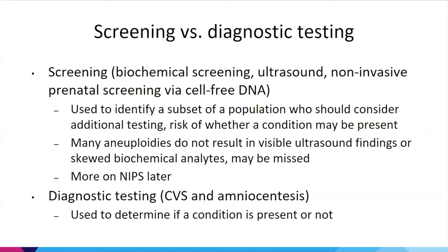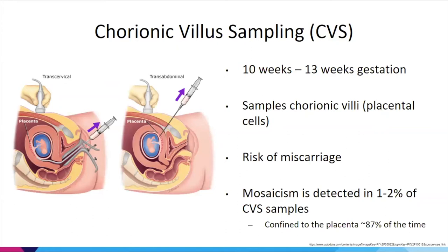This is as opposed to diagnostic testing, which is either chorionic villus sampling, CVS, or amniocentesis, and is used to determine if a condition is present or not. Chorionic villus sampling occurs in the first trimester, between 10 weeks and 13 weeks, 6 days gestation.